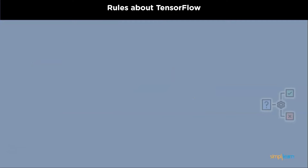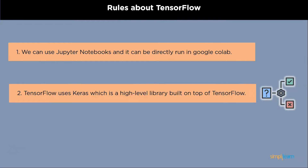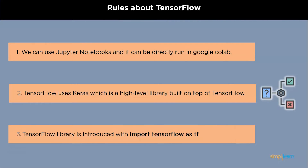Rules about TensorFlow: Firstly, you can use Jupyter notebooks and it can be directly run on Google Colab. TensorFlow uses Keras, which is a high-level library built on top of TensorFlow. Keras facilitates rapid deep learning model development by acting as a wrapper for low-level libraries like TensorFlow. Because the entire system is written in Python, accessibility and debugging are made simple. Lastly, the TensorFlow library is introduced with import TensorFlow as TF.